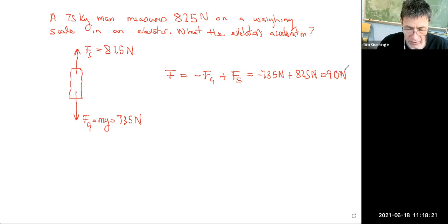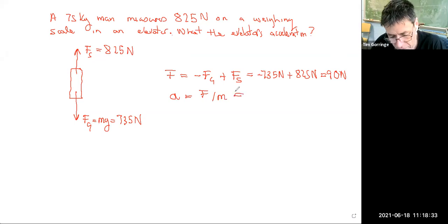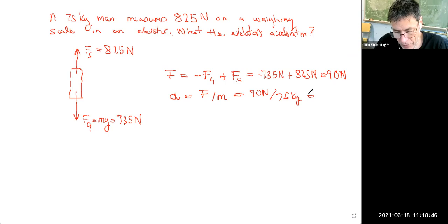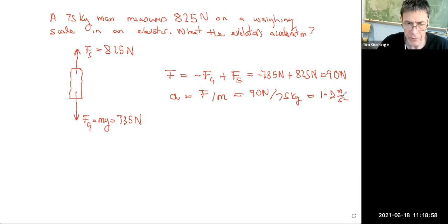The acceleration of the man is then determined by Newton's second law — it's in proportion to the force and in inverse proportion to his inertia. His net force is 90 newtons and his mass is 75 kilograms. If we divide one by the other, that comes out to be 1.2 meters per second squared. That's the man's acceleration.